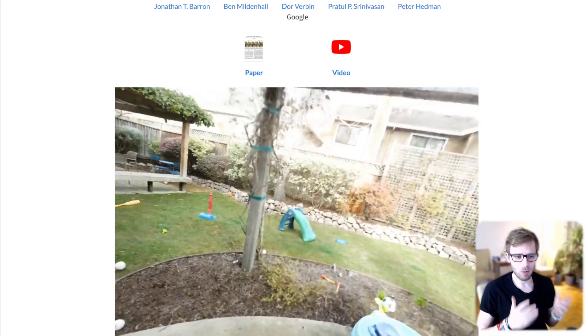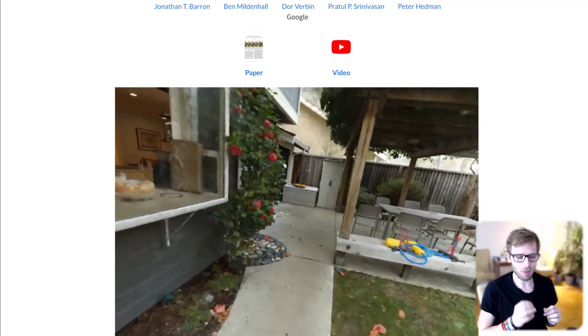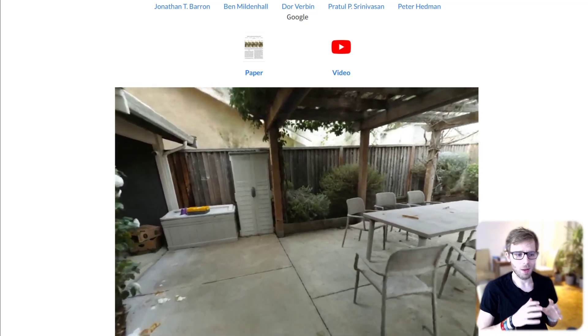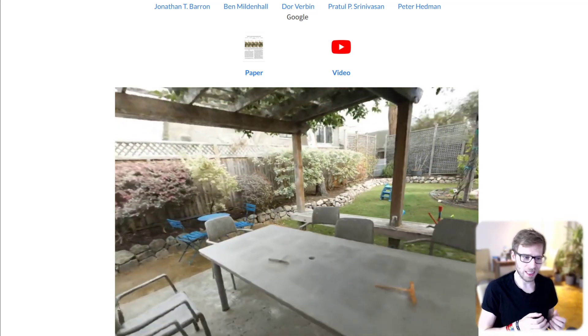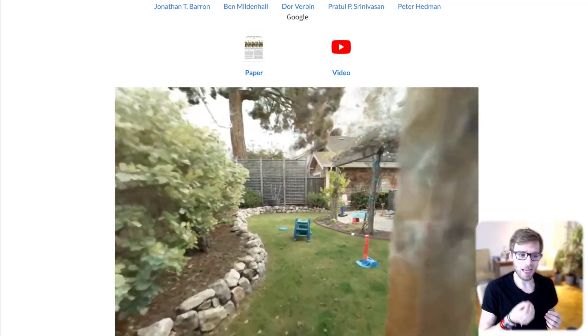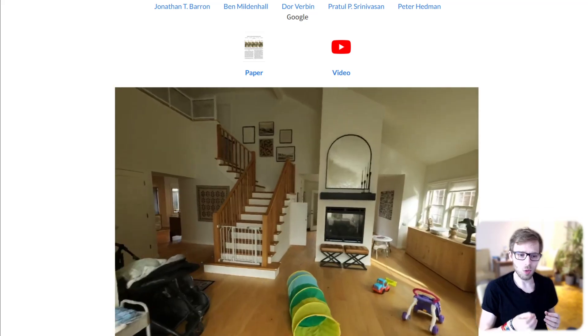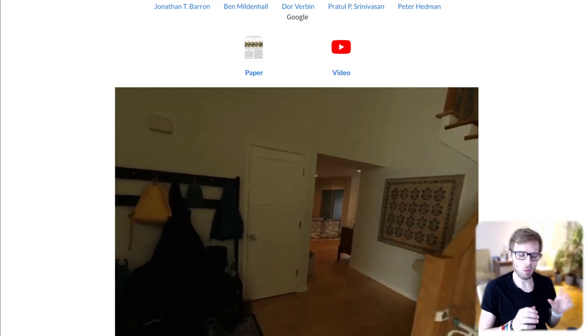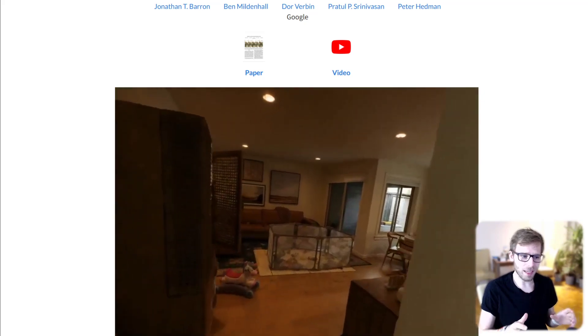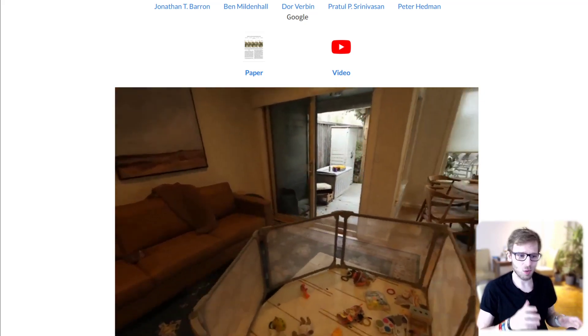which is where grid-based representations come in. By using a grid-based representation in NeRF, learned mapping from spatial coordinates to colors and volumetric density, we can significantly accelerate the training process.